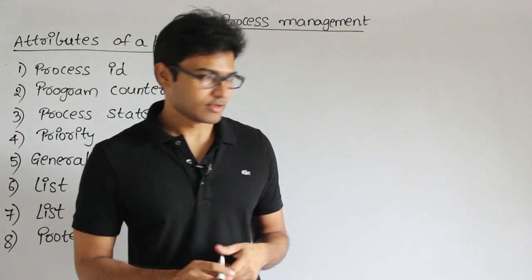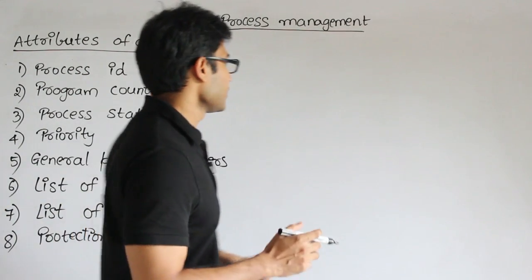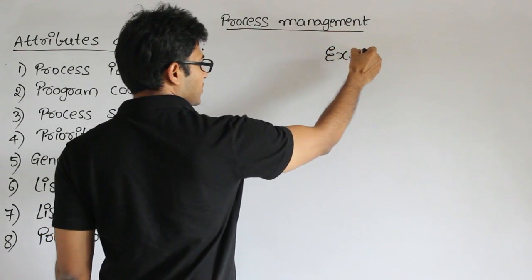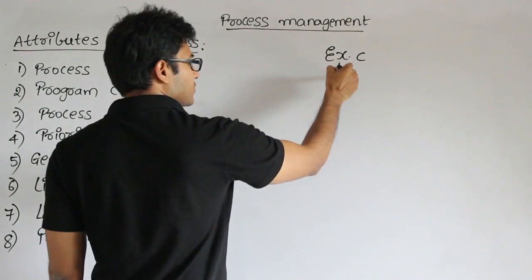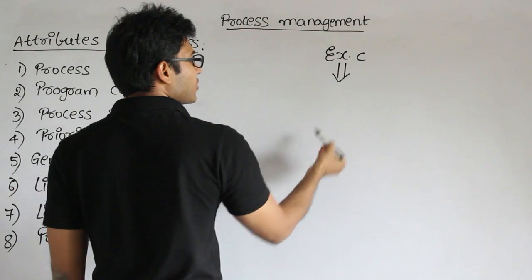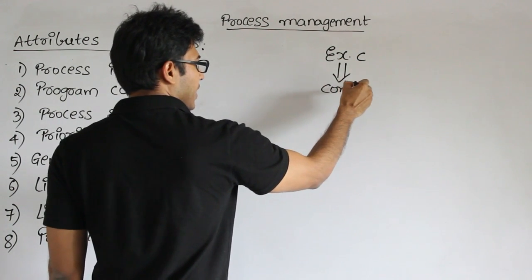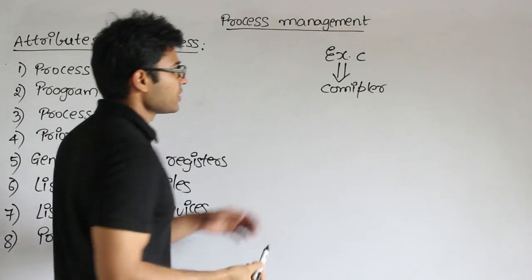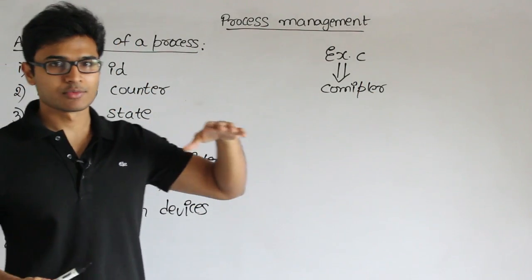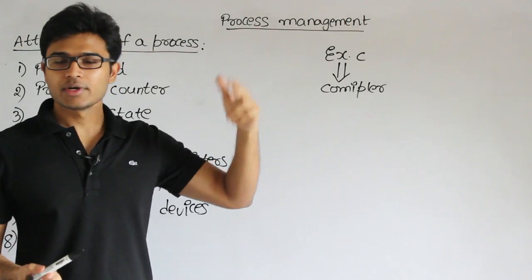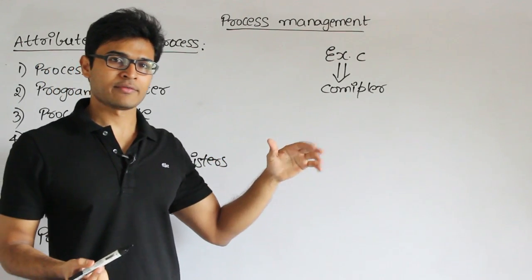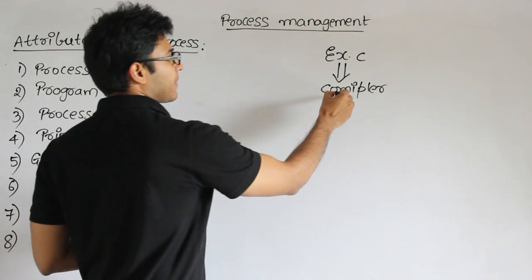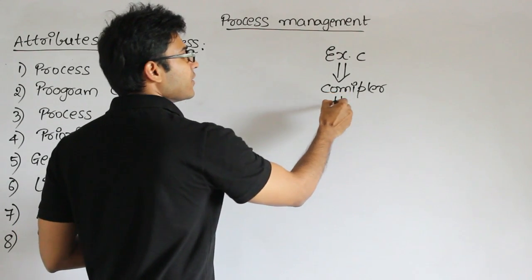Whenever you write any C program, it will look like this — for example, if you have written a C program 'example.c'. This program will be given to the compiler. The compiler will convert this high-level language — your C program is in high-level language — to a low-level language, which is machine-level language that can be executed on the machine.